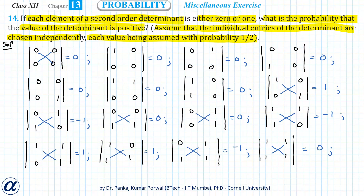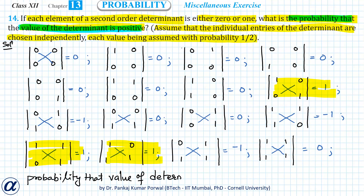Now we want to find the probability that the value of the determinant will be positive. Let's count how many positive-valued determinants we have. Counting them: that's 1, 2, 3 — so in total we have 3 positive-valued determinants out of 16 different determinants. Therefore, the probability that the value of the determinant will be positive is 3 divided by 16.